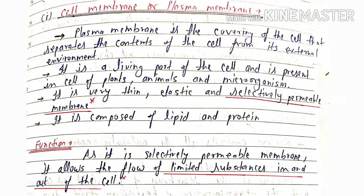It is composed of lipids and proteins. If we can see plasma membrane structure, we can see it is a bilipid layer in which proteins are embedded. As it is selectively permeable membrane, it allows the flow of limited substance from inside the cell to outside.